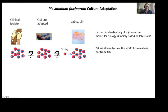Our current knowledge of Plasmodium falciparum molecular biology is mainly derived from lab strains — in fact, just a single one of them, called 3D7. While this is of course great for the reproducibility of science, there is a risk that our understanding of the parasites is biased.